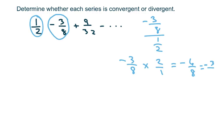Since the absolute value of negative 3 fourths is less than 1, this is convergent.